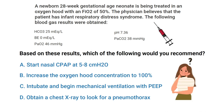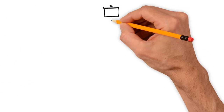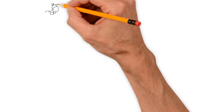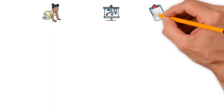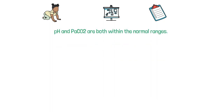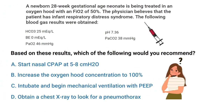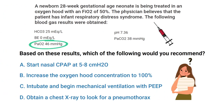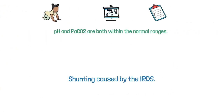Do you know the answer? Let's break it down. To get this one correct, you must be able to interpret the infant's blood gas results and make the necessary changes. You can see that the acid-base status of this infant is normal because the pH and PaCO2 are both within normal ranges. With that said, you can see that this patient has severe hypoxemia by looking at the PaO2 value, most likely due to shunting caused by infant respiratory distress syndrome.